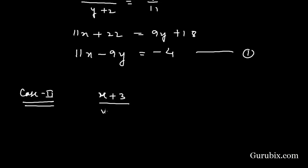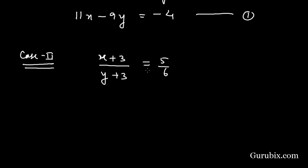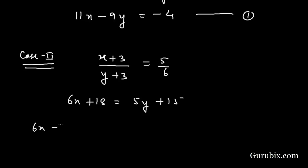In case 2, if 3 is added to both the numerator and denominator then it becomes 5 over 6. Cross multiplying this equation gives us 6x + 18 = 5y + 15, which means 6x − 5y = −3. This is our equation number 2.